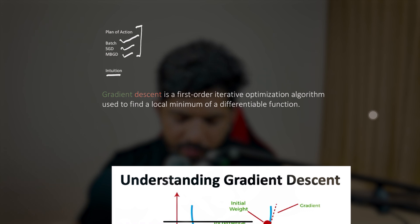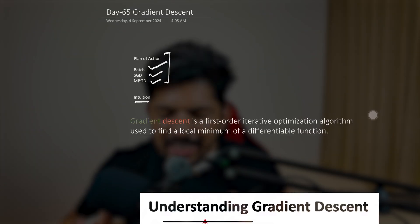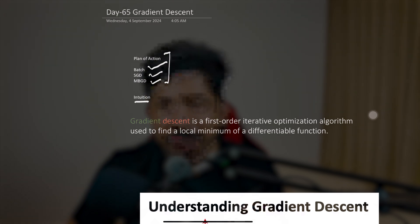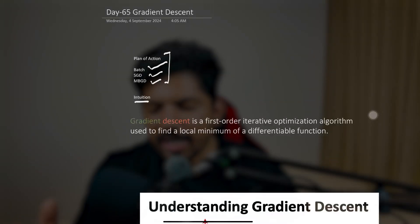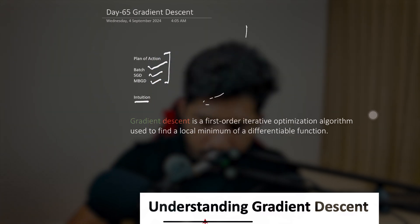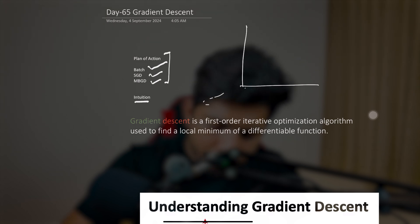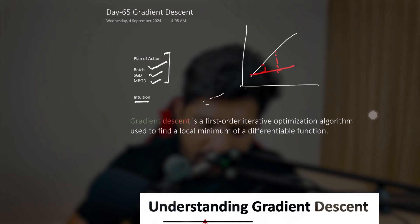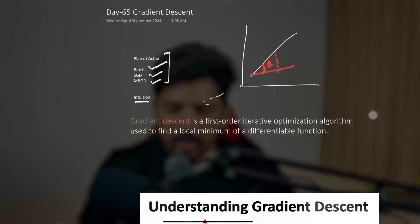The definition says gradient descent is a first order iterative optimization algorithm used to find a local minimum of a differentiable function. Let's break down each word of this definition. The first word is gradient. The literal meaning of gradient is an inclined part of a road or railway, or we can say a slope. You can consider this inclined part — how much it is inclined to this position, the degree, the slope — that is known as the gradient.